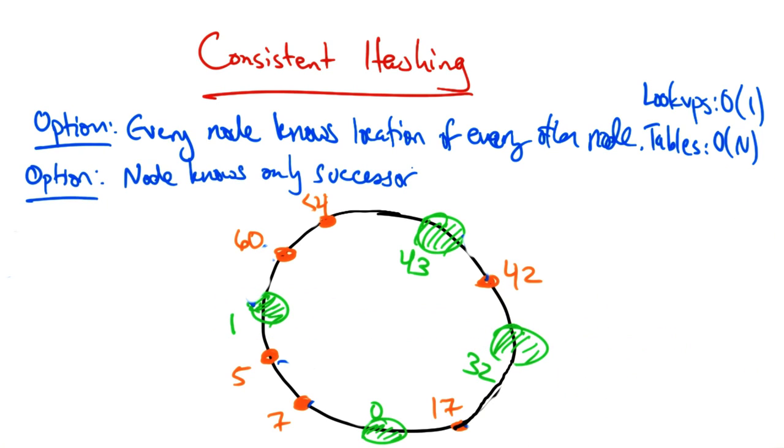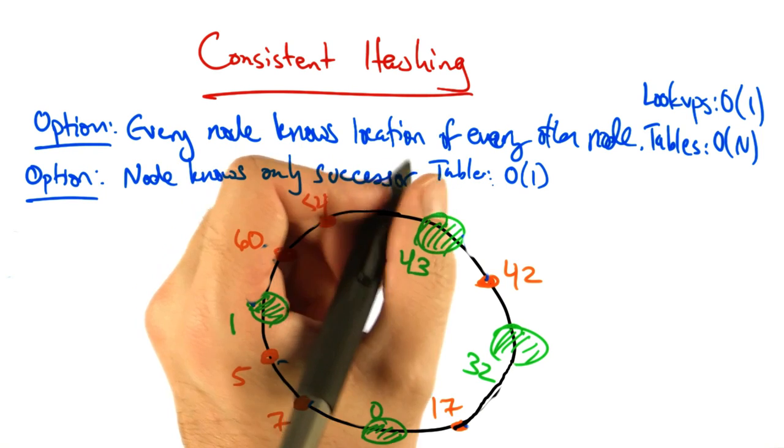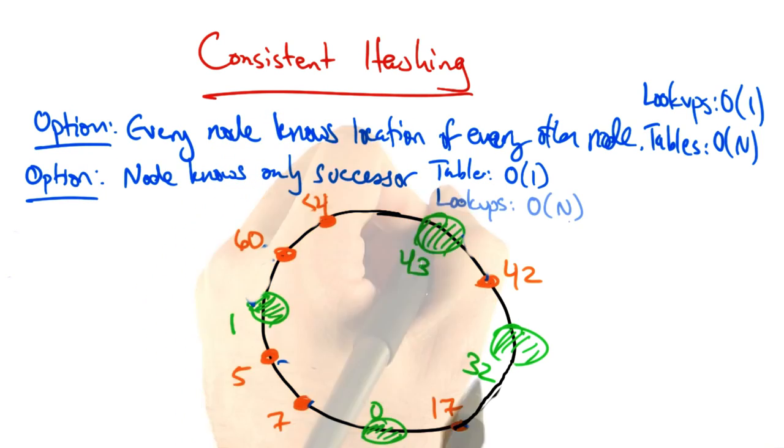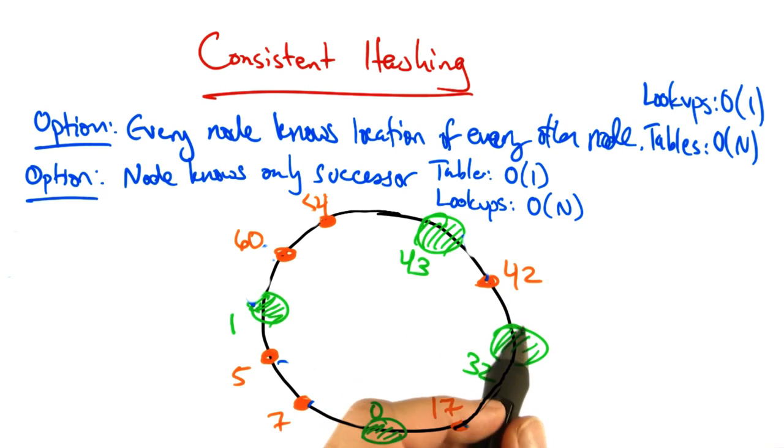Another option is that each node only knows the location of its immediate successor in the ring. So for example, node 32 would know the location of node 43, but of no other node. This results in a small table of size order 1. But locating the content, as before, would require order n lookups.